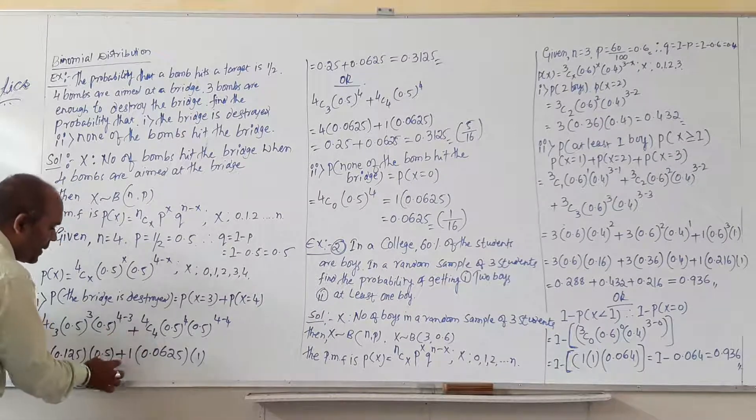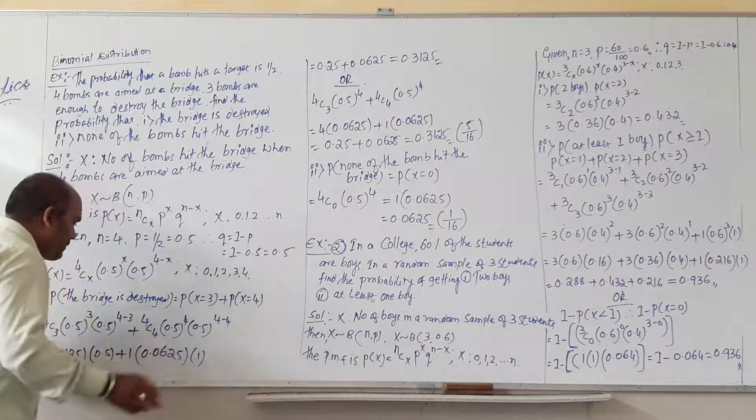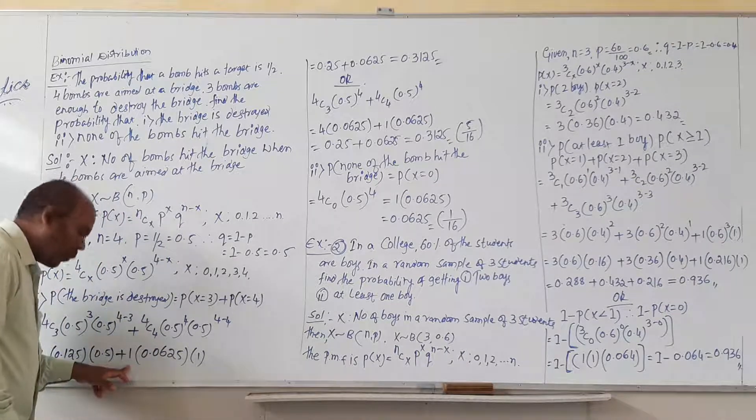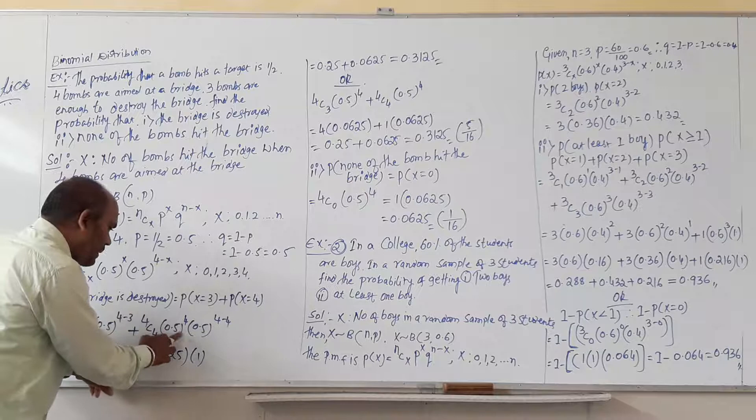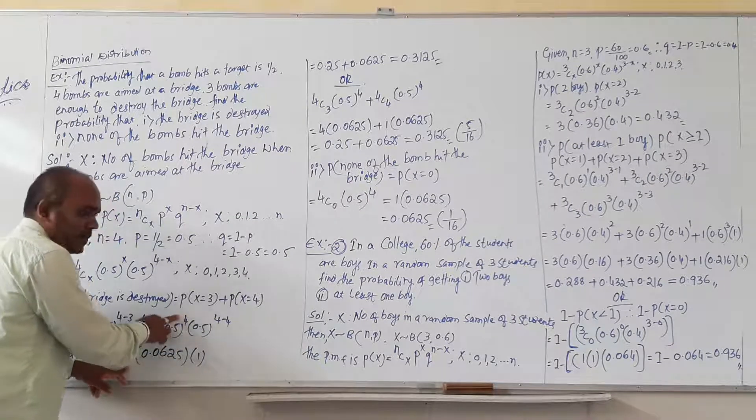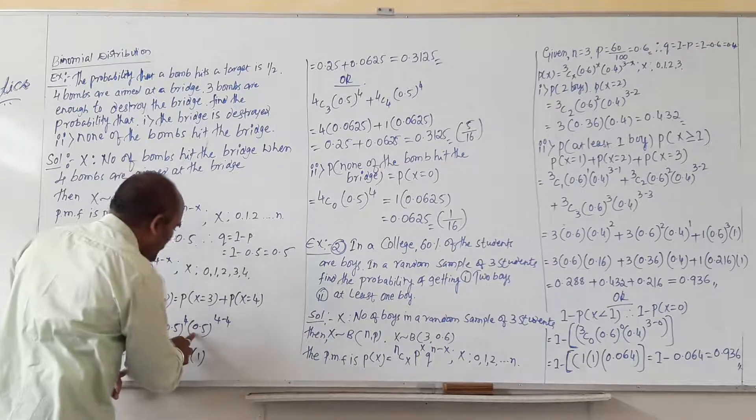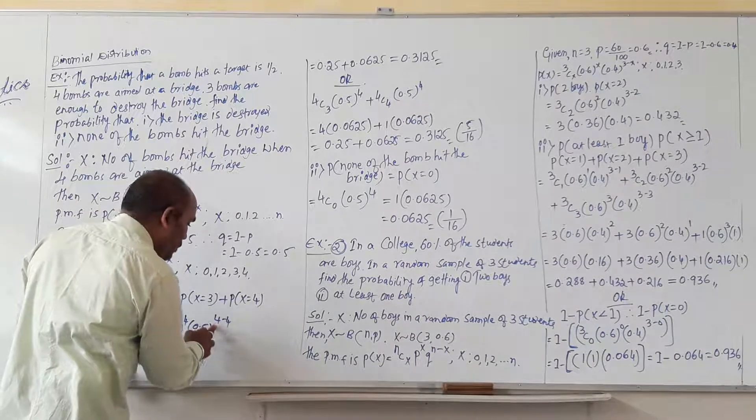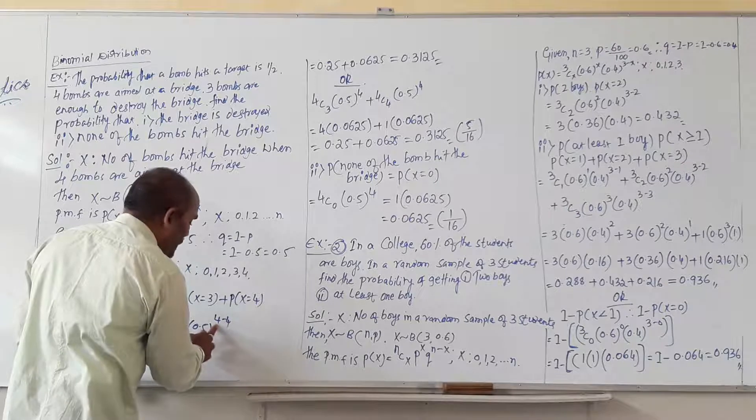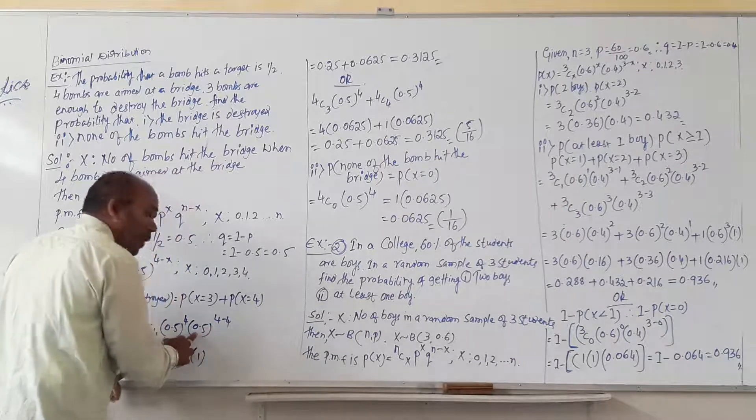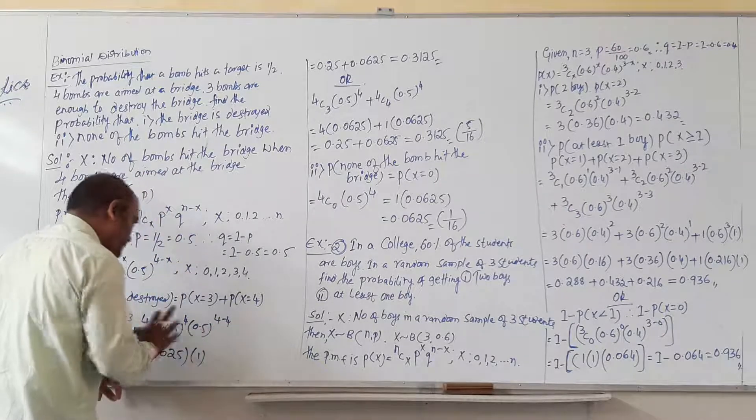Then put plus as it is. 4C4, the relating result you will get, 1. Now 0.5, you have to multiply this 4 times, then you will get 0.0625. Then 0.5 raise to 4 minus 4 is there, so don't take 0. Then we have to consider 1 in that case.